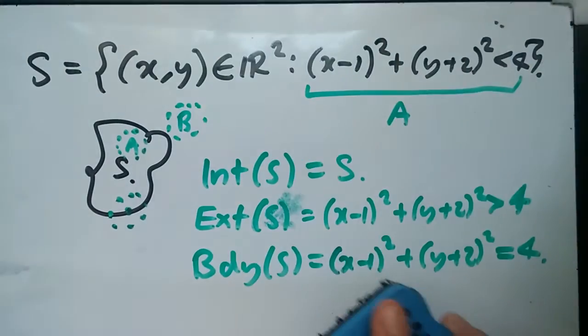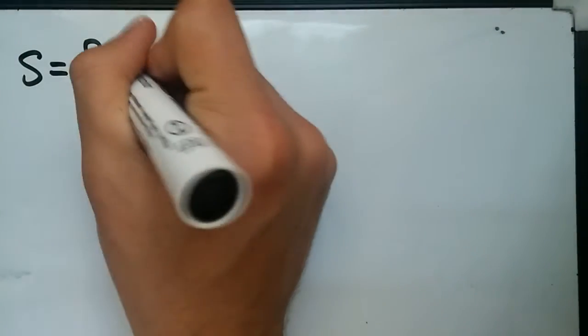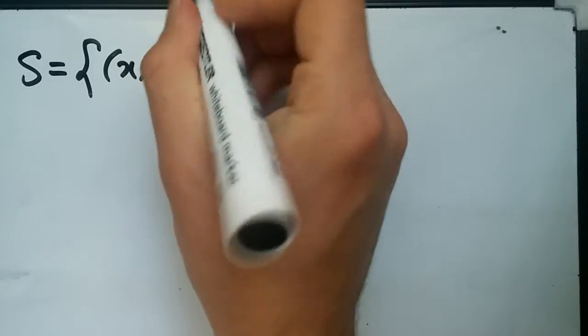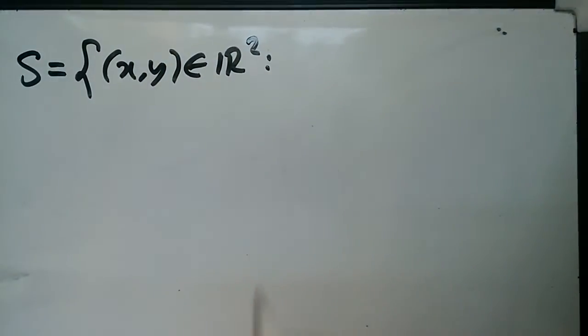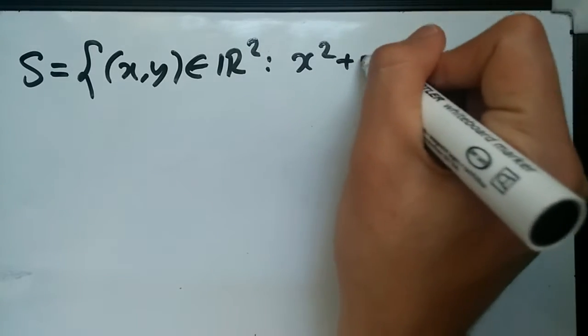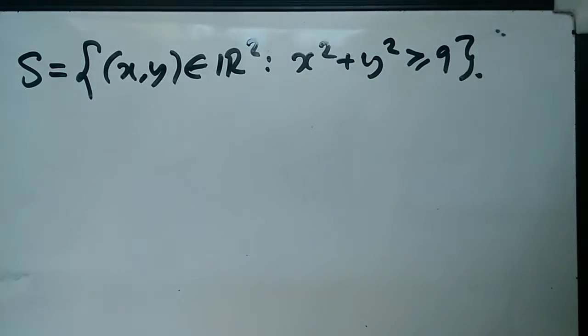So let's try example number 2 now. And maybe this one would be more clear. So suppose I have a function again. And the subset, the topological subspace is defined by x and y within 2D space. And this will be easy. x² + y² ≥ 9. So what do we say about this one now?